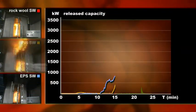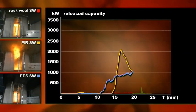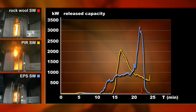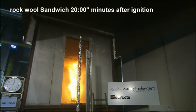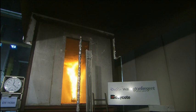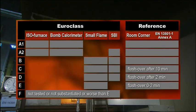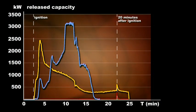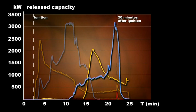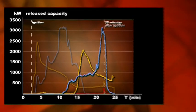The capacities released for PIR and EPS sandwich panels are substantially higher than those for rockwool sandwich panels. Products that do not result in flashover during the 20-minute room corner test — that is, do not reach a fire capacity of 1,000 kilowatts — do not or only slightly contribute to fire propagation, and are classified as class A or B. Flashover occurs within 20 minutes for both PIR and EPS, with or without protective steel plating, meaning these products contribute to the further development of a fire.